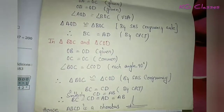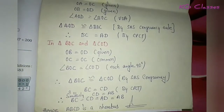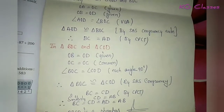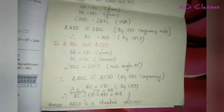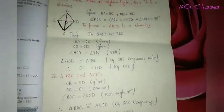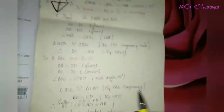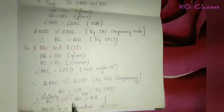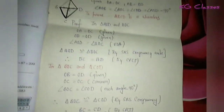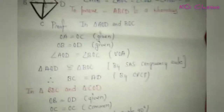So hence ABCD is a rhombus, because the quality of a rhombus is that all sides should be equal, and the diagonals bisect each other at right angles.